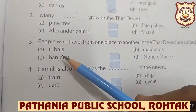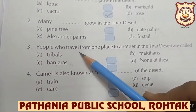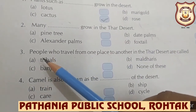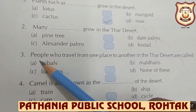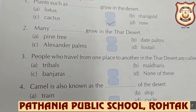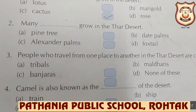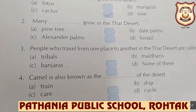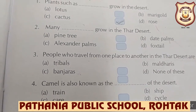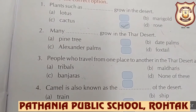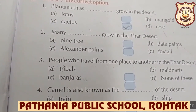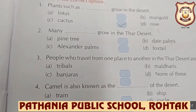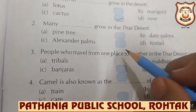Number three: people who travel from one place to another in the Thar desert are called Banjaras. They move from place to place in search of food and water. So everybody will put a tick on Banjaras.